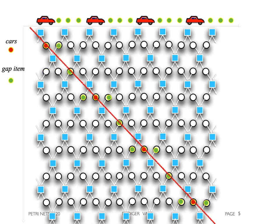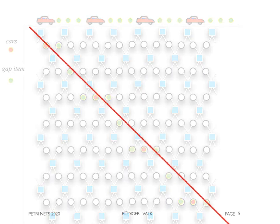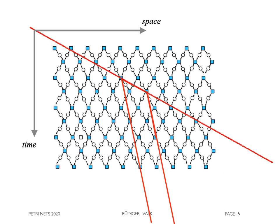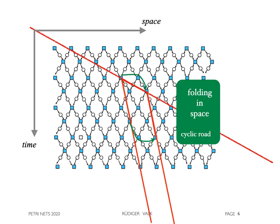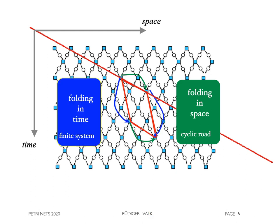The initial state configuration is an inclined line which is used to restrict the space. We consider a finite circular route. A finite model is obtained first by folding in space direction, next we do the same in time direction to obtain a finite and cyclic system.